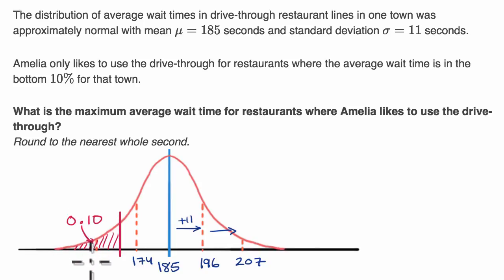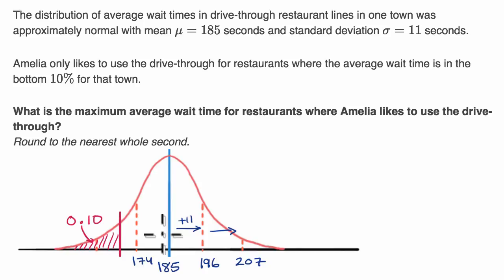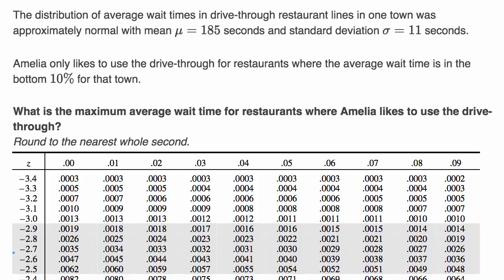The way we can tackle this is to use a Z-table and figure out what Z-score gives us a proportion of only 0.10 being less than that Z-score, and then using that Z-score we can figure out the actual wait time. Since we know this threshold is below the mean — the mean would be the 50th percentile — we know we're going to have a negative Z-score. So I'm going to use the part of the Z-table with negative Z-scores. We're looking for 10%, and we want to make sure we stay within the 10th percentile — not beyond it.